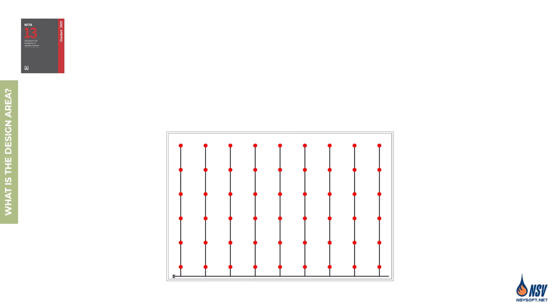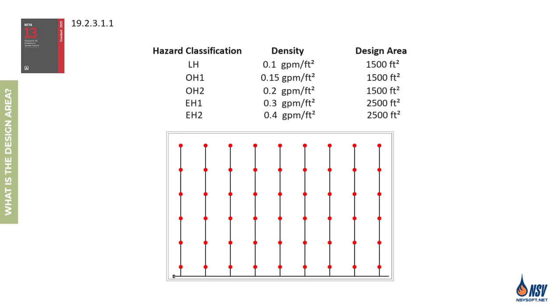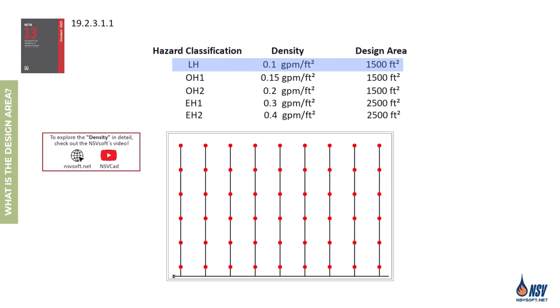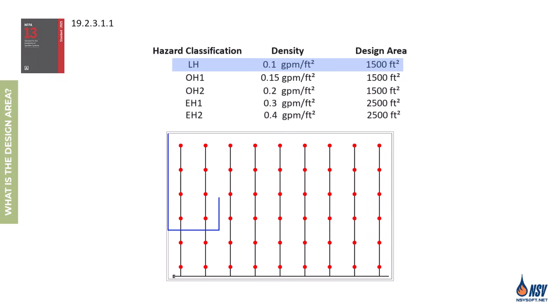For example, according to Table 19.2.3.1.1 in NFPA 13, in light hazard occupancies with a wet pipe system and a horizontal ceiling height of 21 feet, if the sprinkler flow rate meets the minimum design density of 0.1 gallons per minute per square foot, the fire is expected to be contained within a 1,500 square foot area.